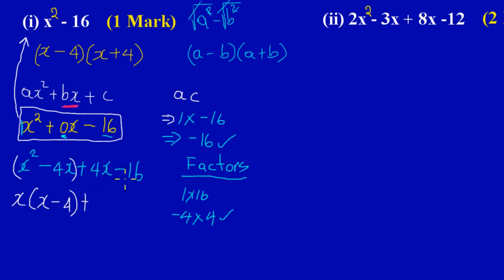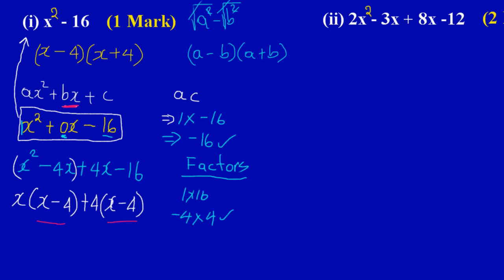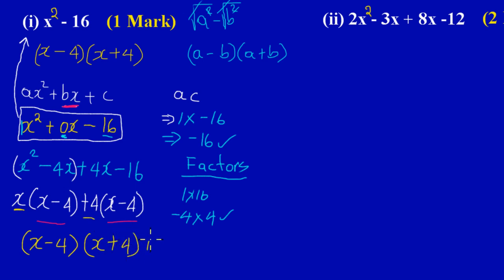Then I take down the plus sign and look at what is common to 4x and negative 16. Four is common: 4 into 4x leaves x, and 4 into negative 16 leaves negative 4. So I have plus 4(x minus 4). Now, as the rule states, what I have inside one bracket is the same as the other — (x minus 4) — confirming I'm on the right track. I take out the common bracket (x minus 4) and combine what's on the outside, giving (x minus 4)(x plus 4).